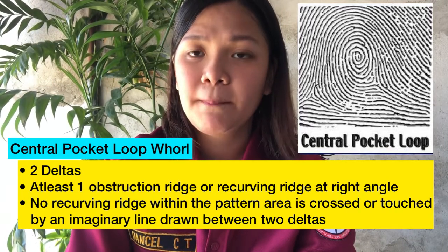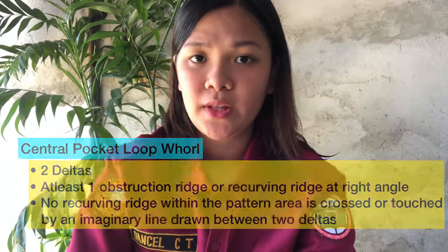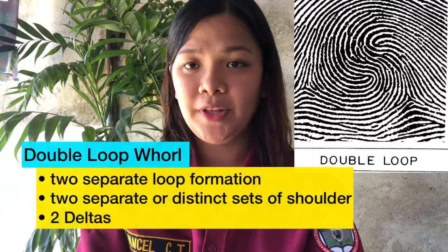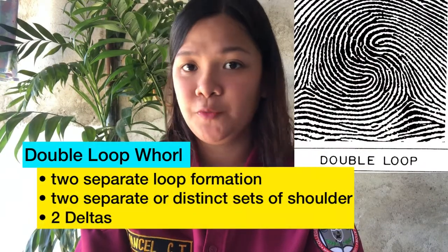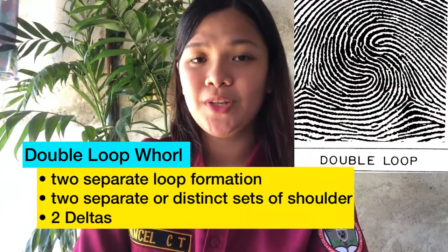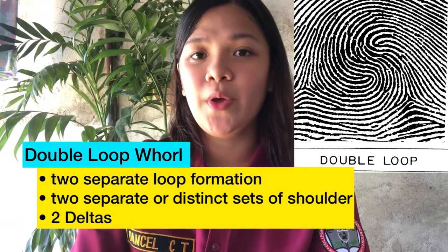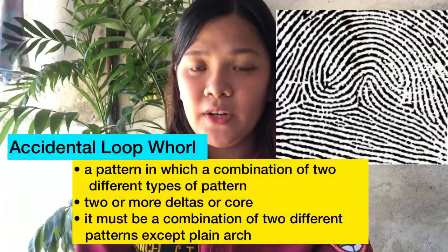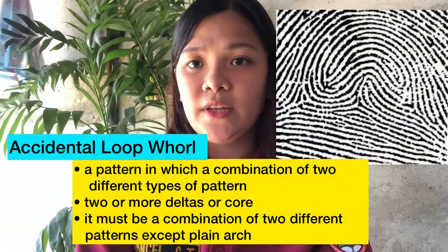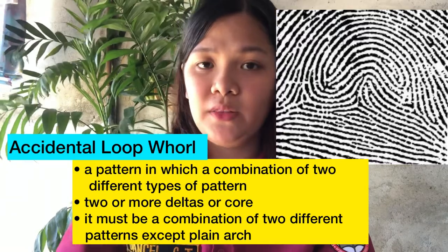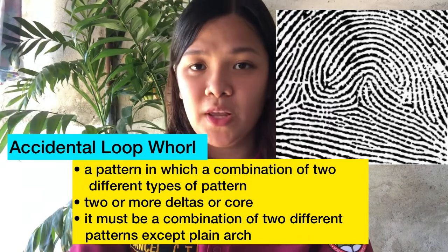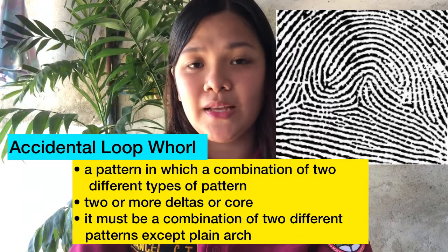No recurring ridge within the pattern area is touched or crossed by an imaginary line drawn between the two deltas. The double loop whorl has two separate loop formations, two separate or distinct sets of shoulders, and also has two deltas. The accidental whorl is a pattern that has a combination of two different types of patterns, two or more deltas and a core, and it must be a combination of two different patterns except the plain arch.